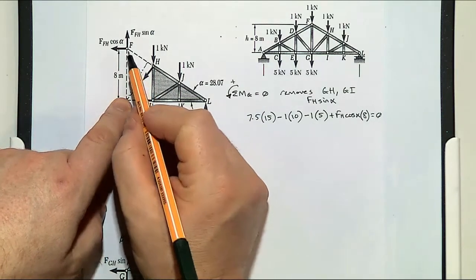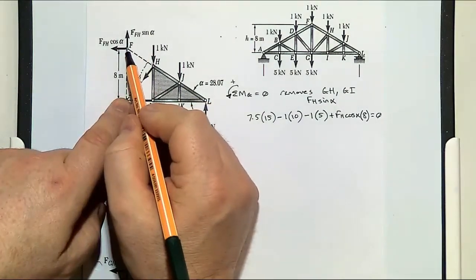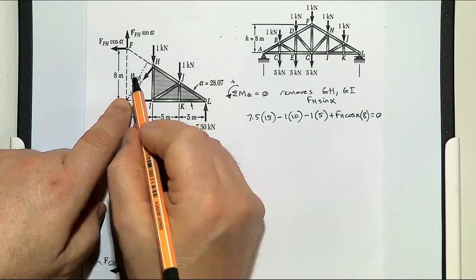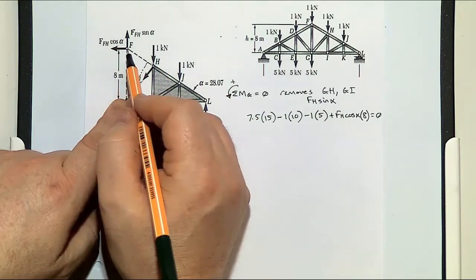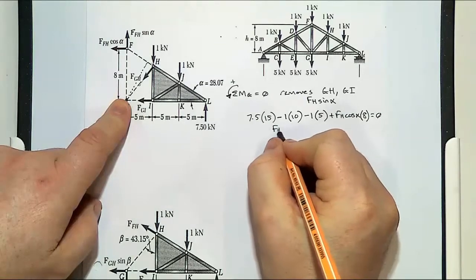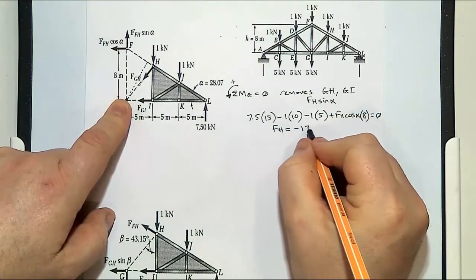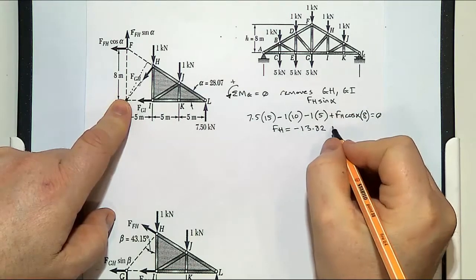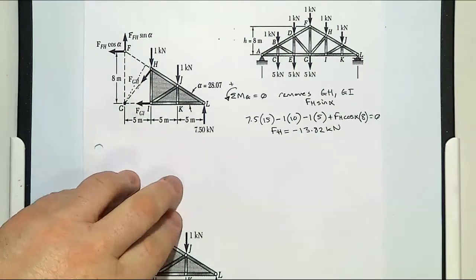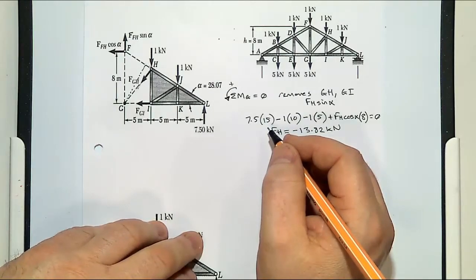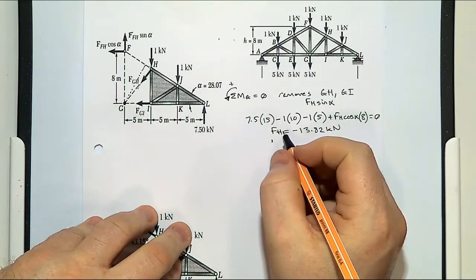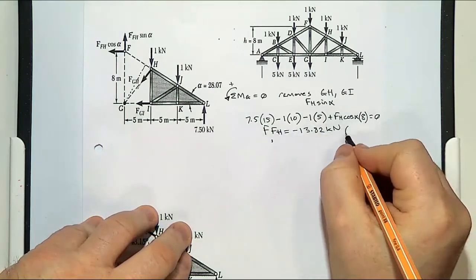You can analyse it at any point along the line as long as you know the distances to the individual components and their perpendicular distances. FH equals minus 13.82 kilonewtons — so that force FH is in compression.